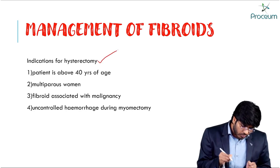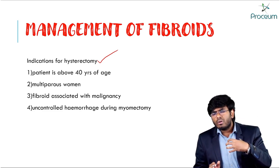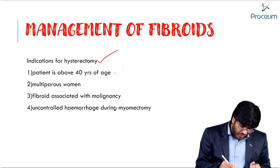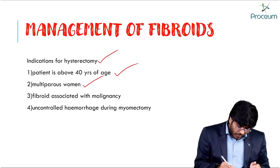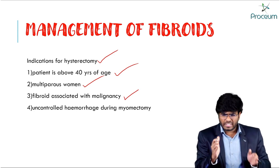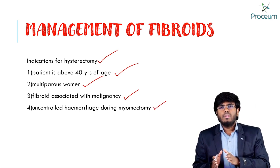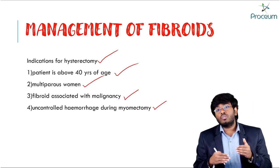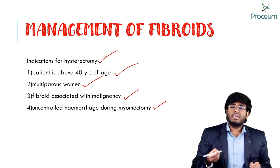Hysterectomy — complete removal of the uterus — is indicated in women above 40 years of age or multiparous women who don't require the uterus, fibroids with malignant transformation, and when uncontrollable hemorrhage occurs during myomectomy, making hysterectomy a life-saving procedure.